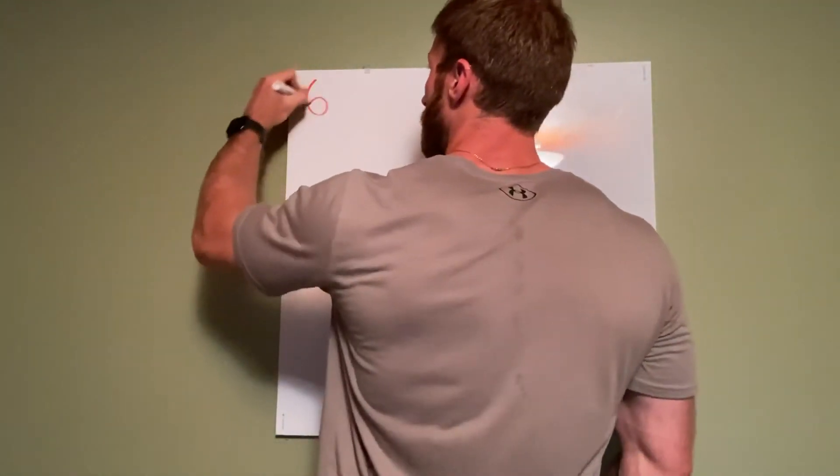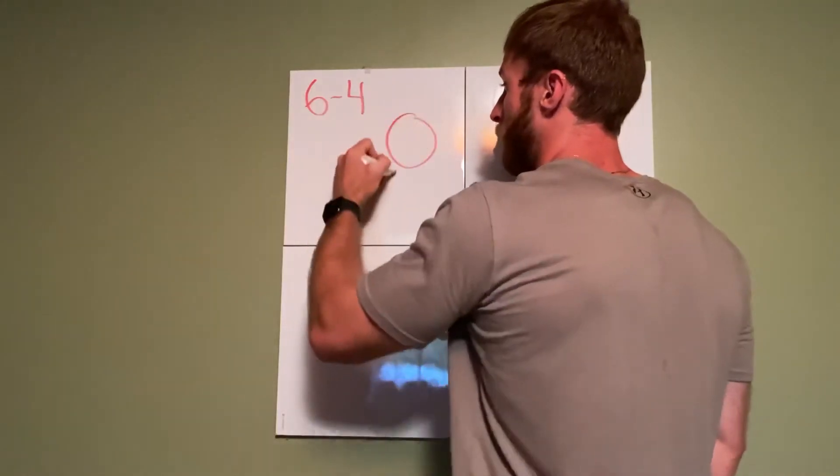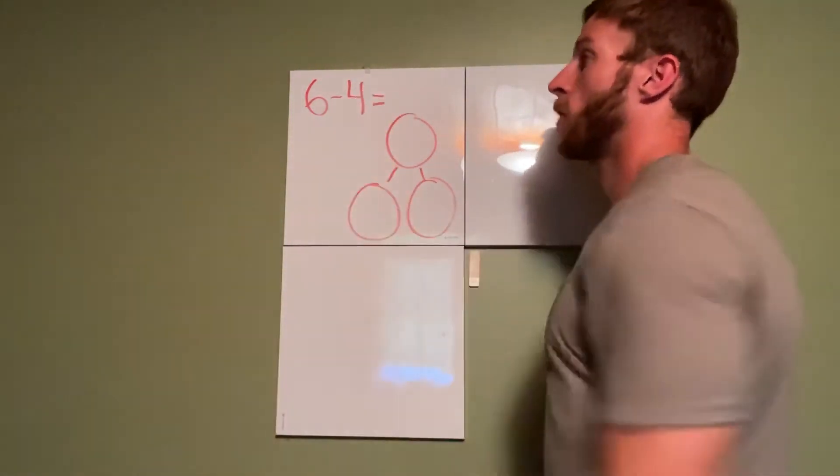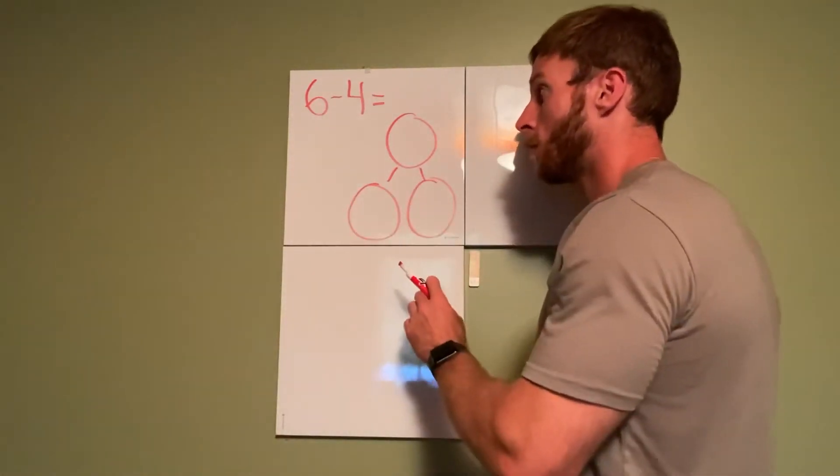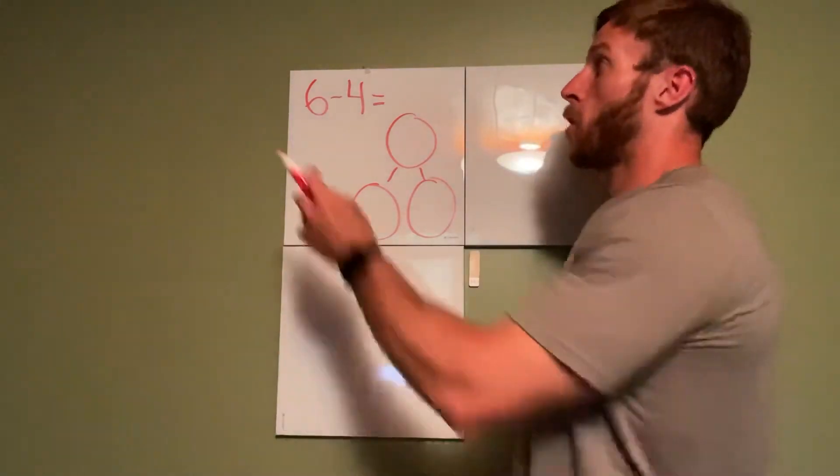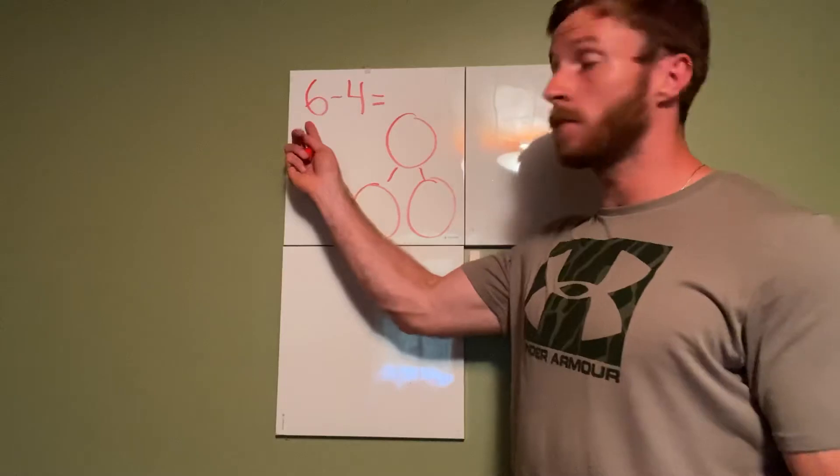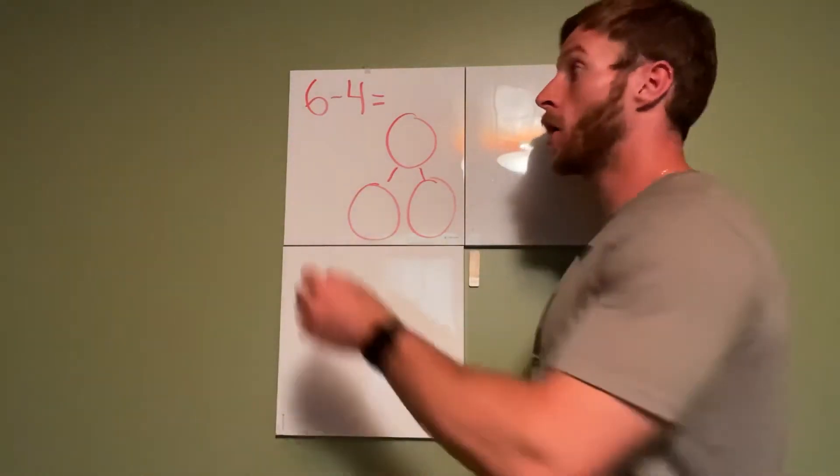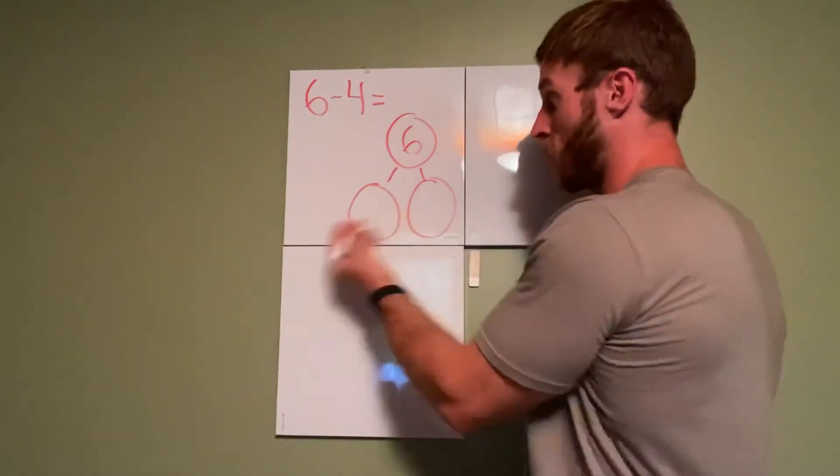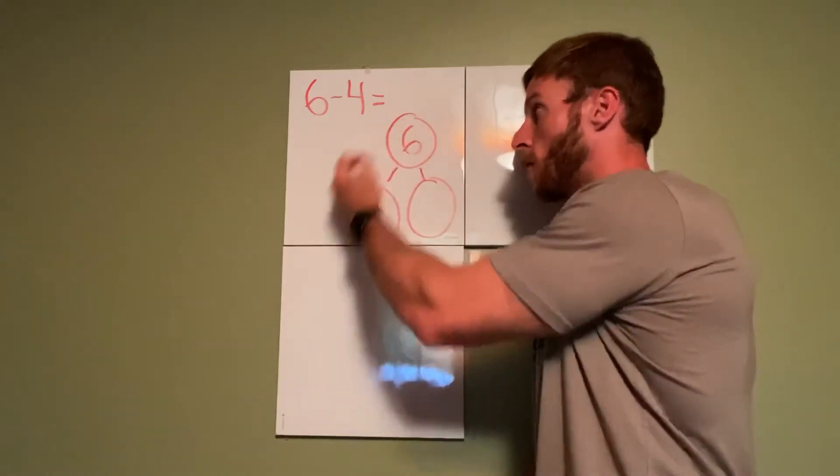Alright, so up here I am writing 6 minus 4. I want us to work together on solving this problem by making a number bond. Okay, so we have 6 minus 4 equals something. Now, what do we know? Do we know our parts? Do we know our whole? Or do we know our whole and one of our parts? Normally it's part plus part, but we're not doing addition. We're doing subtraction. Do you remember which number I said subtraction sentences always start with? The biggest one or the whole. The first number is always the whole. So this must be 6. Now 4 must be one of our parts. Doesn't matter which one I write it in. I'm going to write it right there. So 6 minus 4 equals. We're going this way.